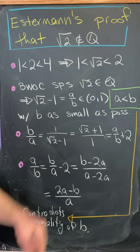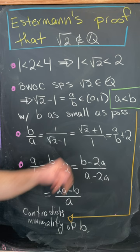We'll write it as a over b where a is less than b because it's less than 1, and b is minimal.